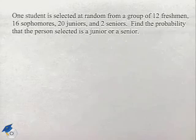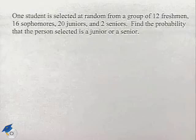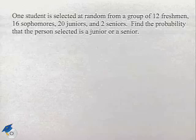One student is selected at random from a group of 12 freshmen, 16 sophomores, 20 juniors, and 2 seniors. Find the probability that the person selected is a junior or a senior.